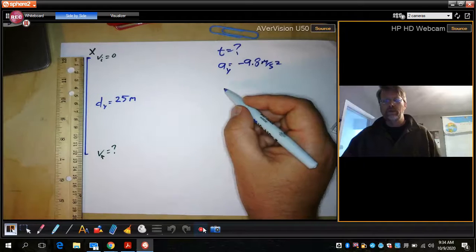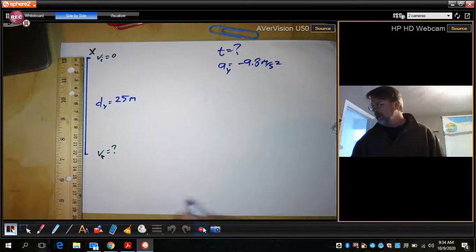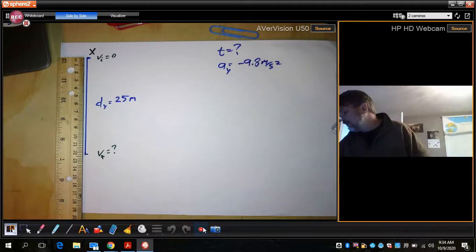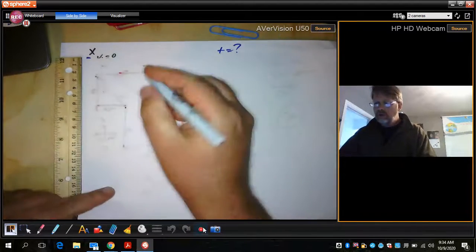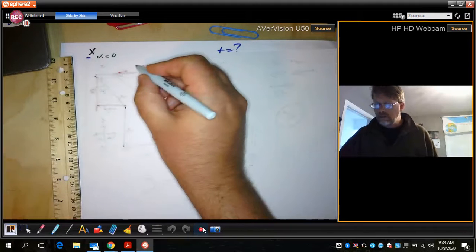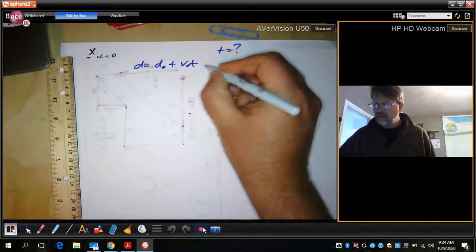So what we have to do is we have to choose between different equations. Now let's say we have a bunch of choices here and I'm going to put the choices down over here. So here we have d equals distance.